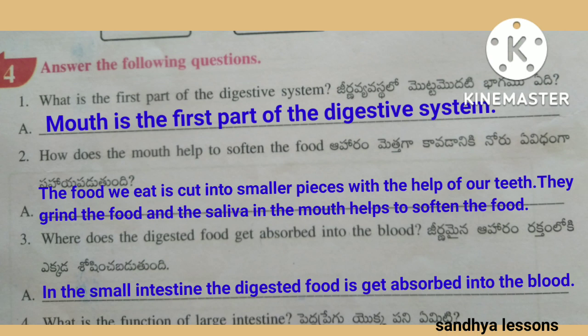Second question: How does the mouth help to soften the food? The food we eat is cut into smaller pieces with the help of our teeth. They grind the food, and the saliva in the mouth helps to soften the food.